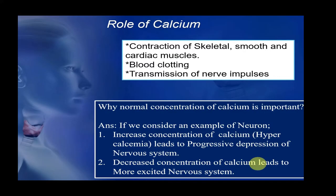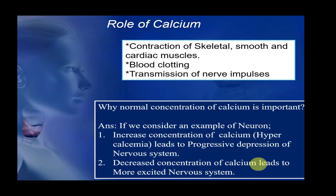Calcium plays a very important role in the contraction of skeletal, smooth, and cardiac muscles. It is also important for blood clotting, which we studied during the blood module, and for transmission of nerve impulses. These are the major effects of calcium.